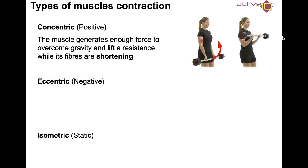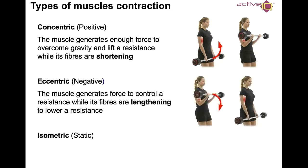Looking at types of muscle contraction: concentric, known as positive — the muscles generate enough force to overcome gravity and lift a resistance while the fibers are shortening. Eccentric, known as negative — the muscle generates force to control a resistance while its fibers are lengthening to lower the resistance. For example, in a bicep curl: as she lifts the bar up, she's in the concentric phase; as she lowers the bar down, she's in the eccentric phase.